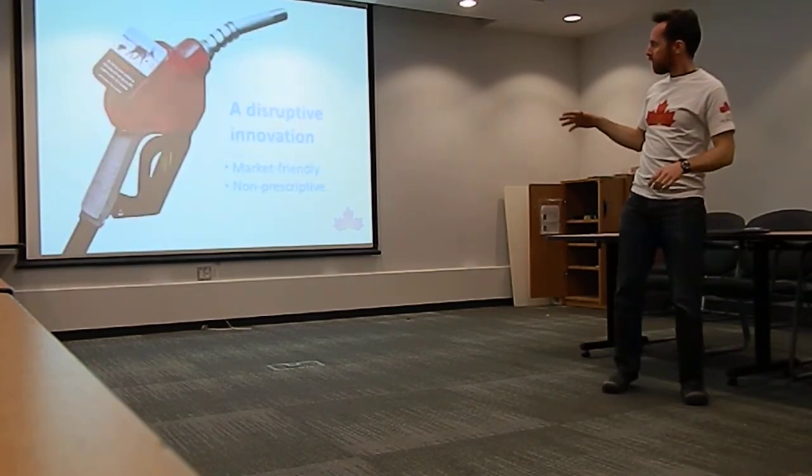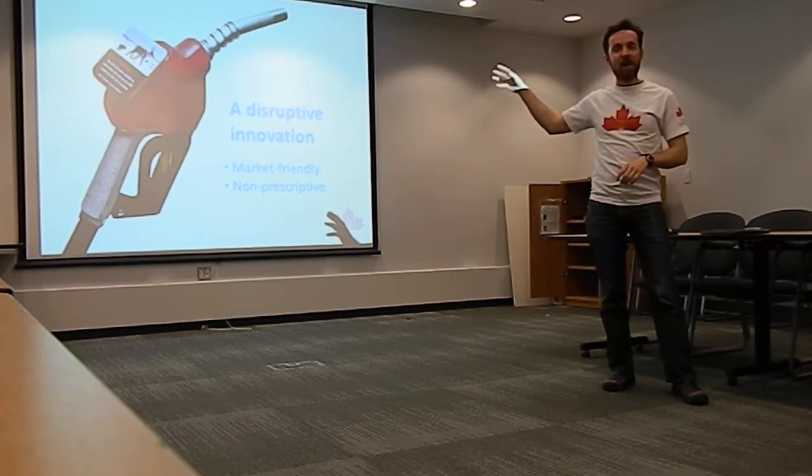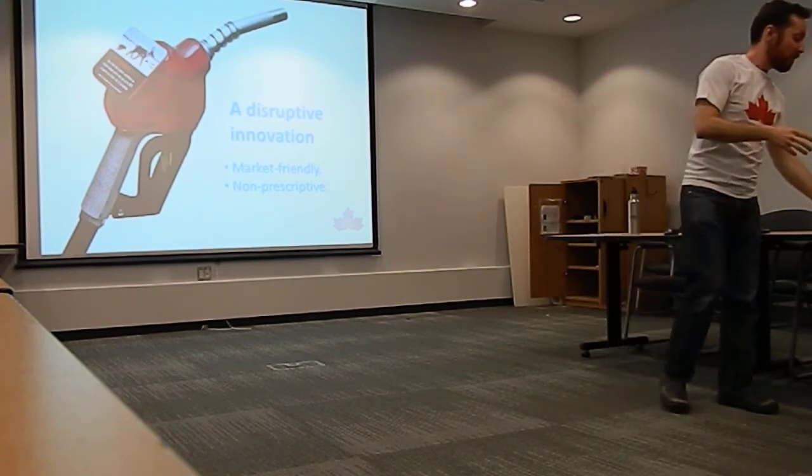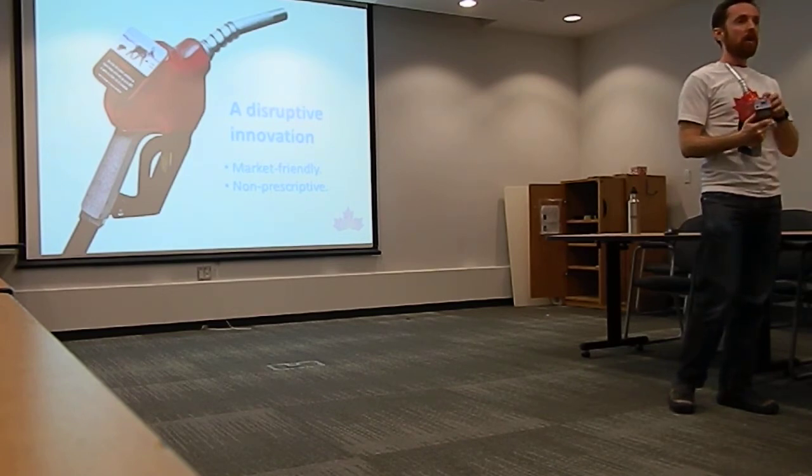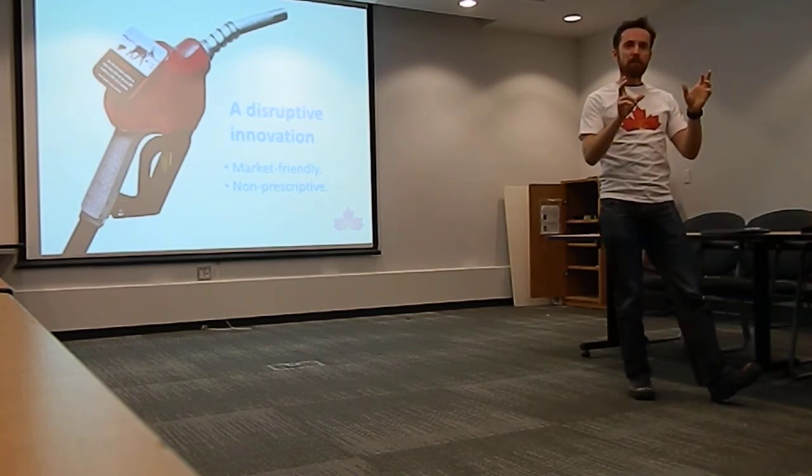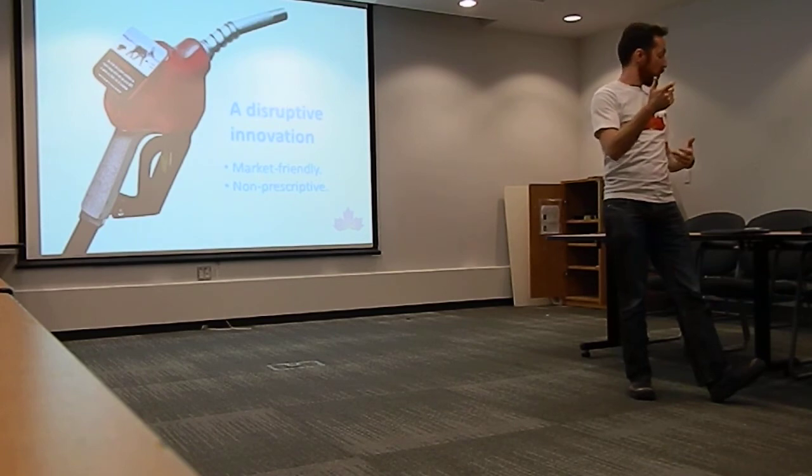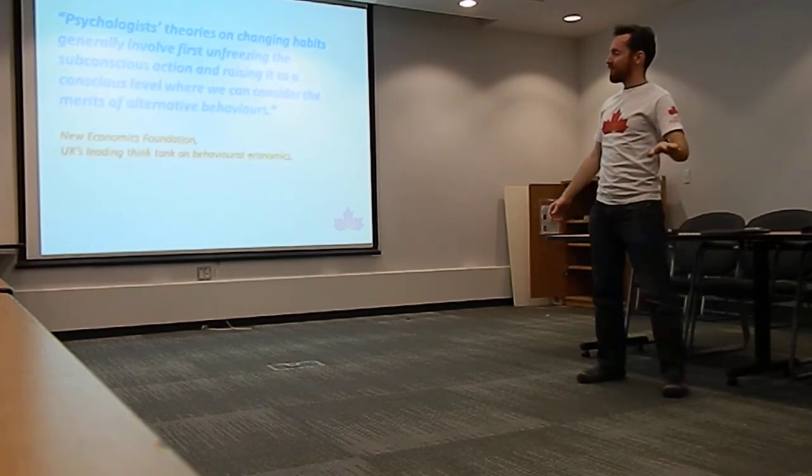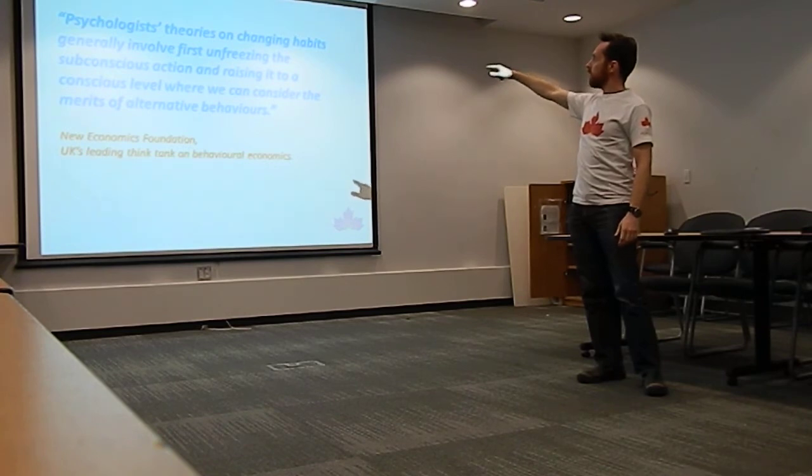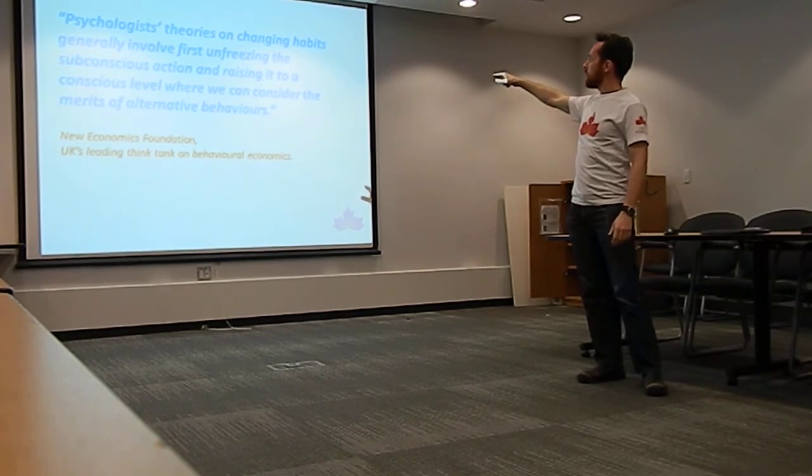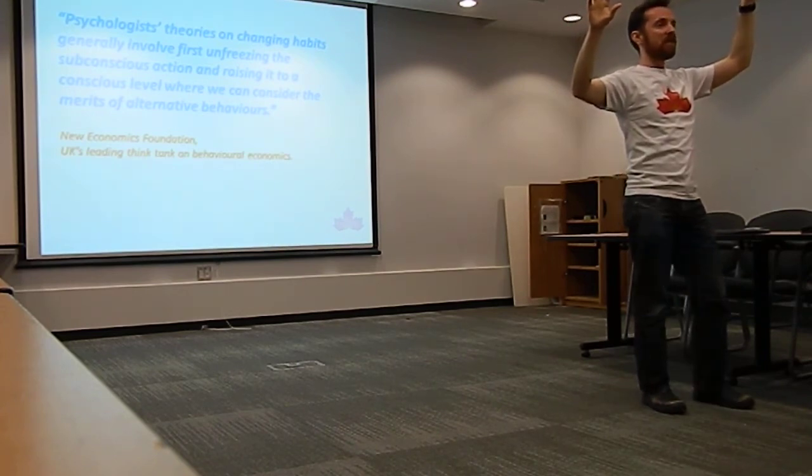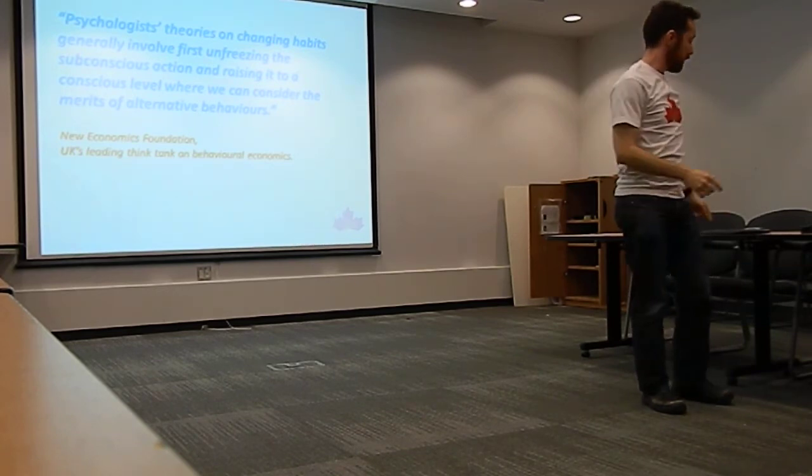One more piece. I was in a community on the East Coast a couple weeks ago. They said, Rob, we're too conservative here. This will never fly. I'm like, guys, this is a conservative idea. It's market friendly. It's non-prescriptive. If you think about it, this is just information. We're not telling anyone what to do. We're just providing markets, communities with relevant information, relying on markets to respond. It's actually more of a right of spectrum intervention. I see the potential for broad support from places with strong environmental values, and perhaps places with even more conservative political leanings. It's not just the story of my mom. This is from the leading think tank in the United Kingdom on behavioral economics. Psychologist theories on changing habits generally involve first unfreezing the subconscious action and raising it to a conscious level where we can consider the merits of alternative behaviors. Places to transition to. First, what we need to do is unfreeze, challenge the status quo. Loosen that grip. It's then easier to transition to these places. That's the role this piece plays.